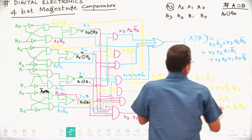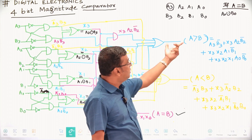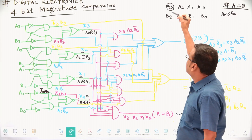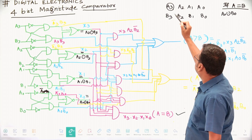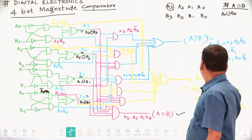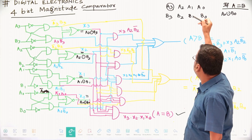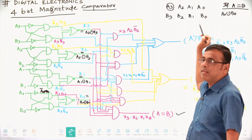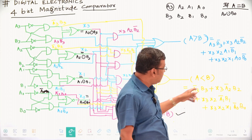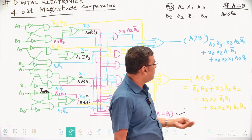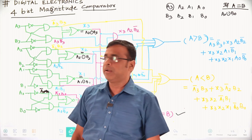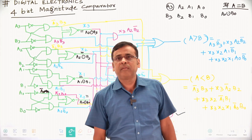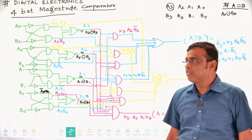Another condition is A less than B — it is the opposite of A greater than B. First condition: if A3 less than B3, that is A3-bar·B3. Second: if A3=B3 and A2 less than B2. Third: if A3=B3, A2=B2, and A1 less than B1 — the whole 4-bit is less. Fourth: if A3=B3, A2=B2, A1=B1, and A0 less than B0 — whole 4-bit is less. This is the logic — three conditions: A greater than B, A less than B, and A equal to B — the block diagram of the 4-bit magnitude comparator. Thank you students. Next class we will discover more logic circuit designs.